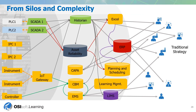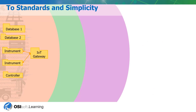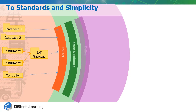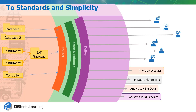We want to go from silos and complexity to standards and simplicity. Through our three layers — collect, store and enhance, and deliver — we're able to take all of the complicated data sources, put them into one central location, and have our users access them in a smart and efficient way.